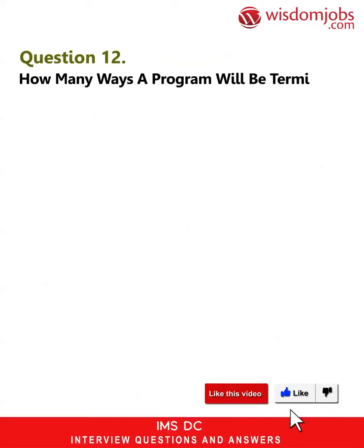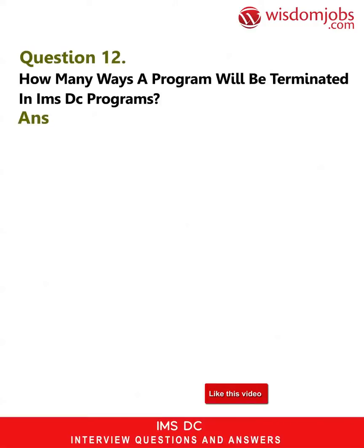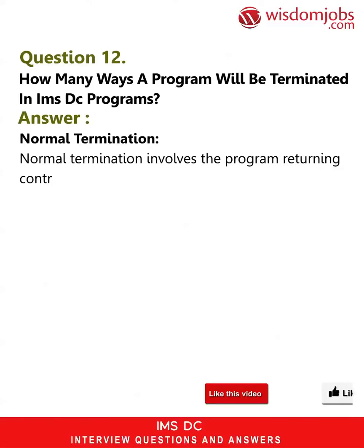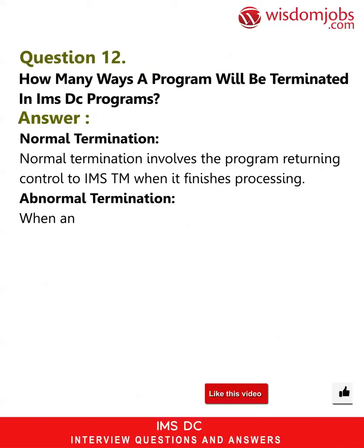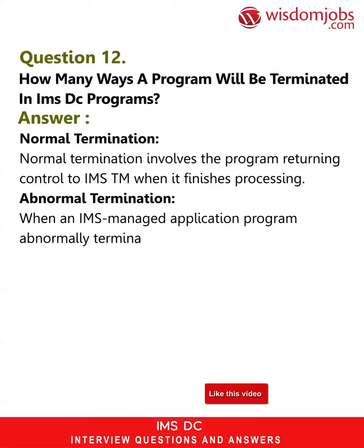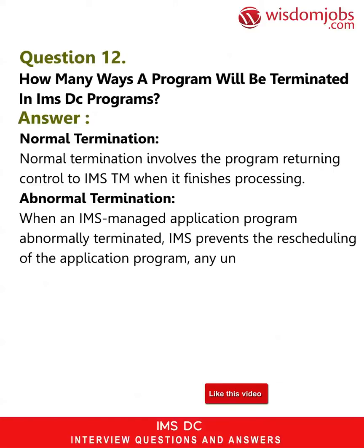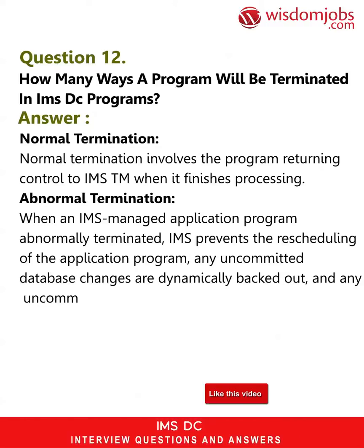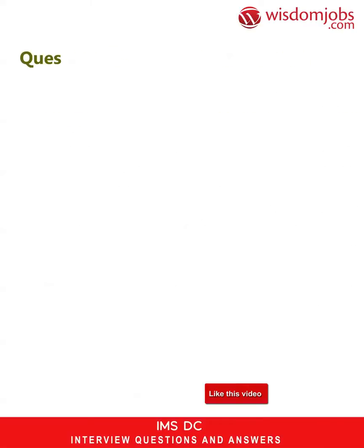This new transaction can continue the processing of the first transaction and respond to the originating logical device, or process as an independent transaction unit of work. Question 12: How many ways can a program be terminated in IMS DC programs? Answer: Normal termination involves the program returning control to IMS TM when it finishes processing. Abnormal termination occurs when an IMS-managed application program abnormally terminates — IMS prevents rescheduling of the program.